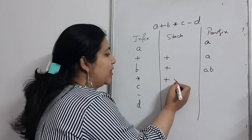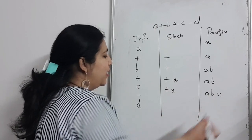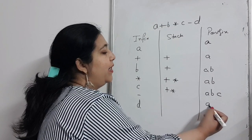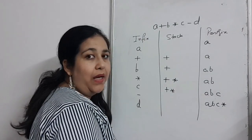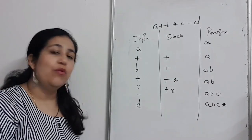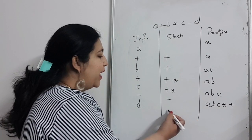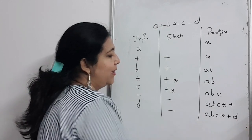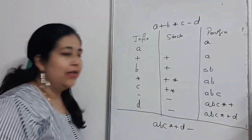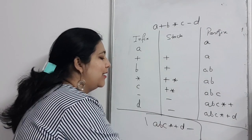Now minus cannot come on top because multiply has higher precedence, so multiply shifts to postfix. Then plus, which is same level as minus, so plus is removed and goes to postfix. Now minus can be added to stack. Then D comes, which is operand, so it goes to postfix. When the expression finishes, we pop remaining operators from stack, so minus goes to postfix. This is my postfix notation for the given infix expression.